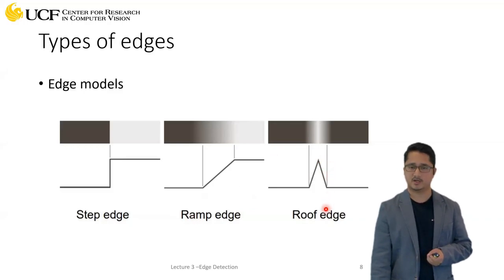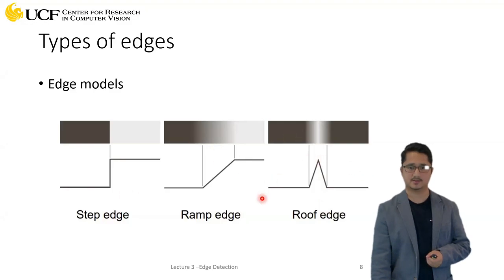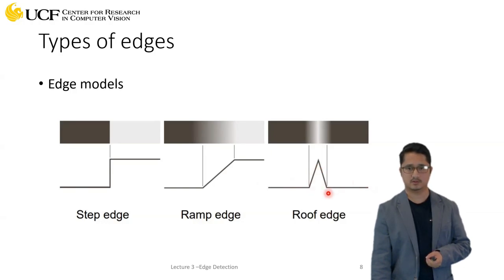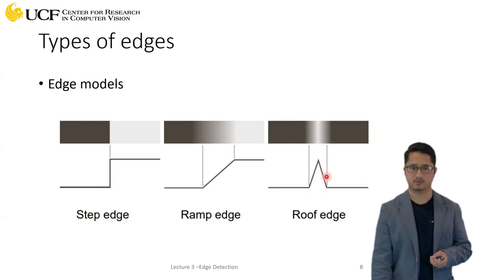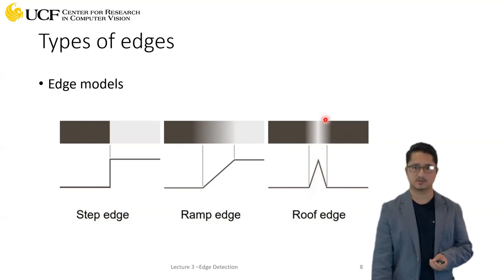The third type is a roof edge. Here the pixel value starts low, increases, and then comes back down to the original value — it rises and falls, forming a roof shape — and that pattern causes this type of edge.